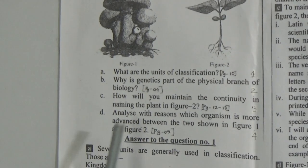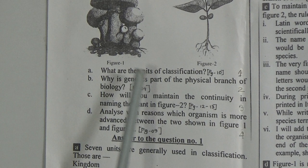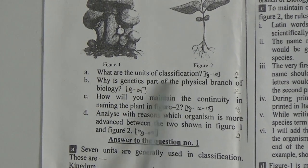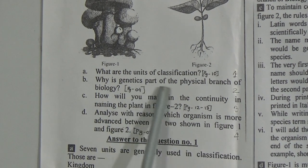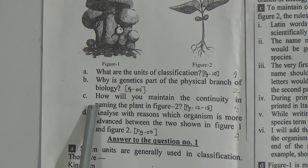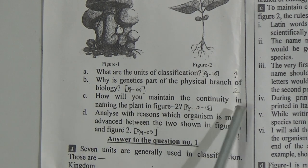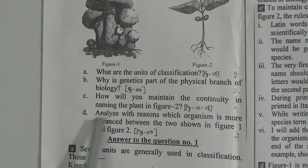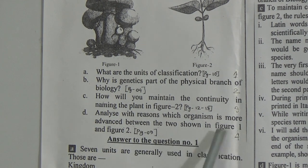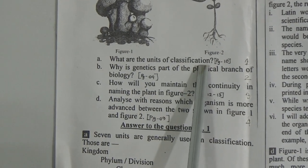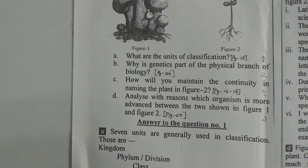Here is the stem with two pictures and the questions. The questions from your book exercise are: (a) What are the units of classification? (b) Why is genetics part of the physical branch of biology? (c) How will you maintain continuity in naming the plant in figure two? (d) Analyze with reason which organism is more advanced between the two shown in figure one and figure two. For question (a), you will find the answer on page number 10.